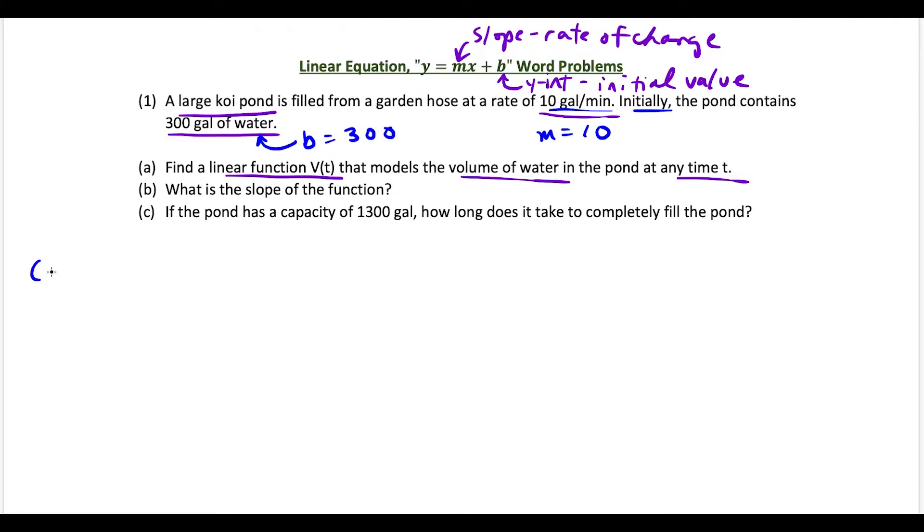For part a, we're going to write our function V(t). Instead of saying y = mx + b, we're going to write it in terms of t for time. So our slope is 10, giving us 10t, plus our b value is 300. So V(t) = 10t + 300. This takes care of part a.